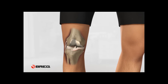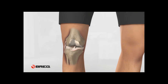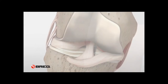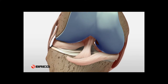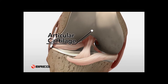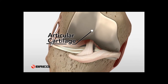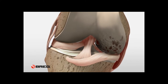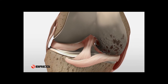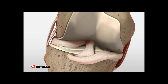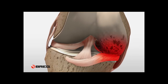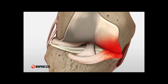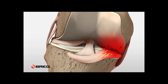Along with damage to the meniscus, articular cartilage can wear away over time, causing a narrowing of the joint space. When this shock absorption is lost and the joint space narrows, bone can rub against bone, causing pain.